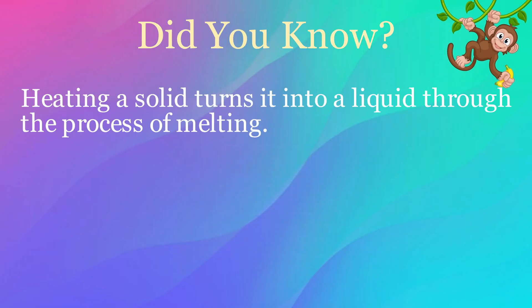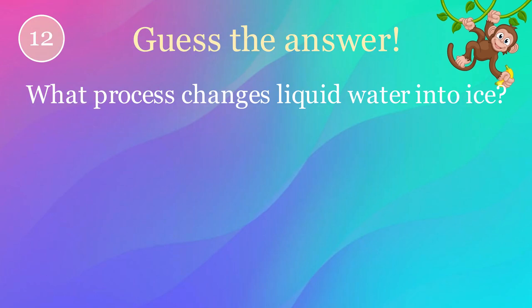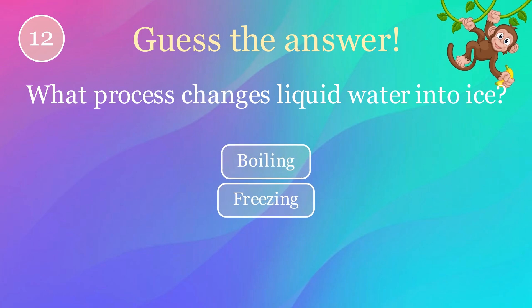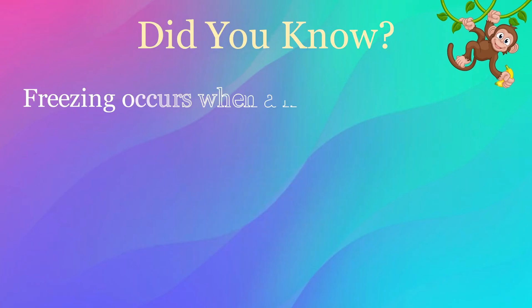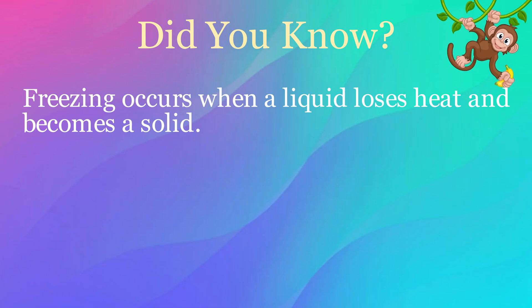What process turns a liquid into a solid? Options: boiling, freezing, evaporation. The correct answer is freezing. Here's an interesting fact: freezing occurs when a liquid loses heat and becomes a solid.